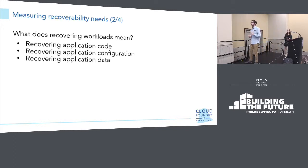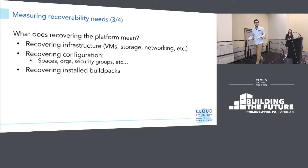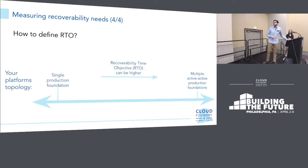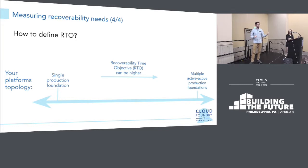What does recovering workloads mean? There's application code, which you may or may not be able to re-push; application configuration and environment variables; any service bindings; and application data. When recovering the platform, things to consider include the infrastructure itself — any VMs, networks, storage devices — the configuration of the platform such as orgs and spaces, security groups, and any installed build packs, including custom build packs.